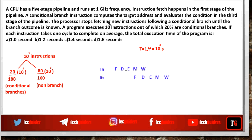We do not overlap the instructions — we stall the pipeline until the branch target is known. As a result, the following instruction will be processed in only three cycles instead of one cycle, meaning two extra cycles are taken. If the branch outcome is decided in the third stage of the pipeline, the number of extra cycles required for the following instruction is 3 - 1 = 2. So for all instructions following conditional branches, 2 extra cycles are required.